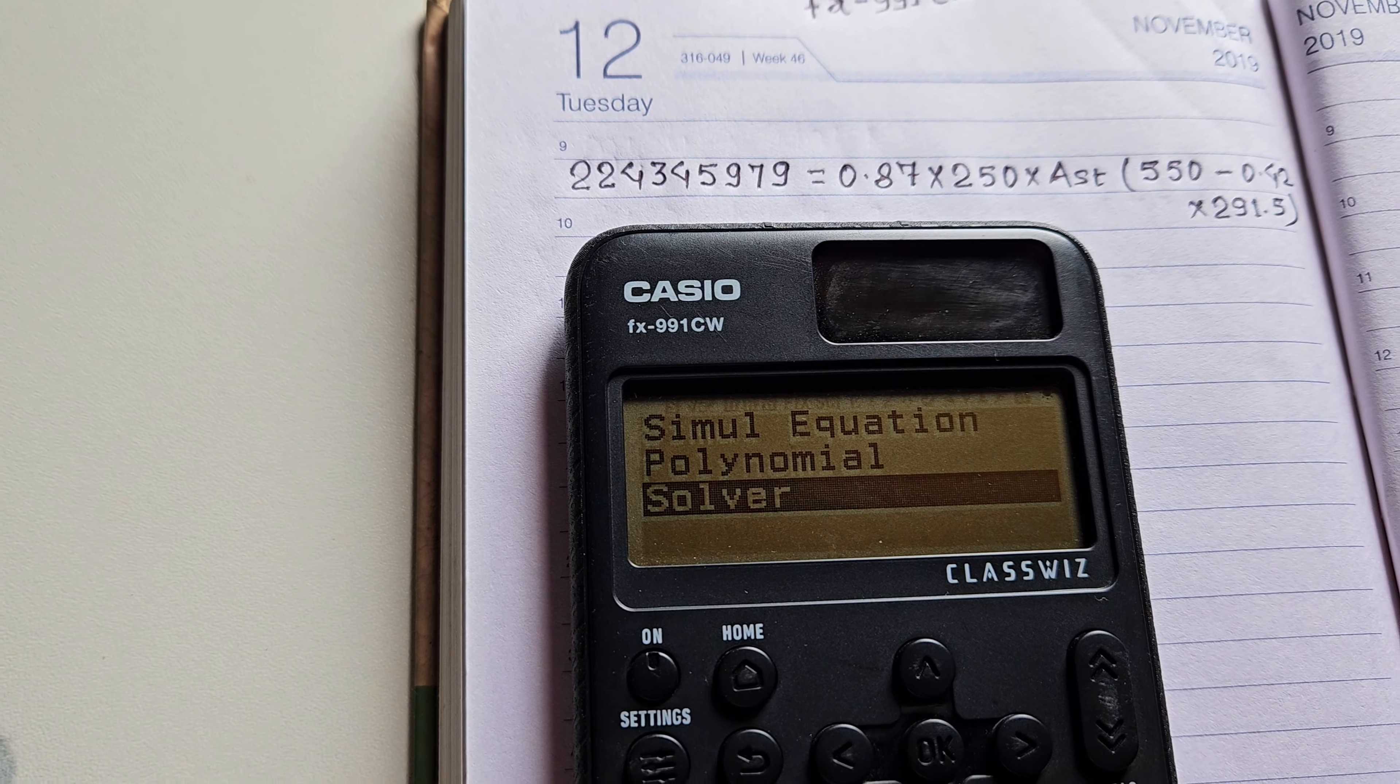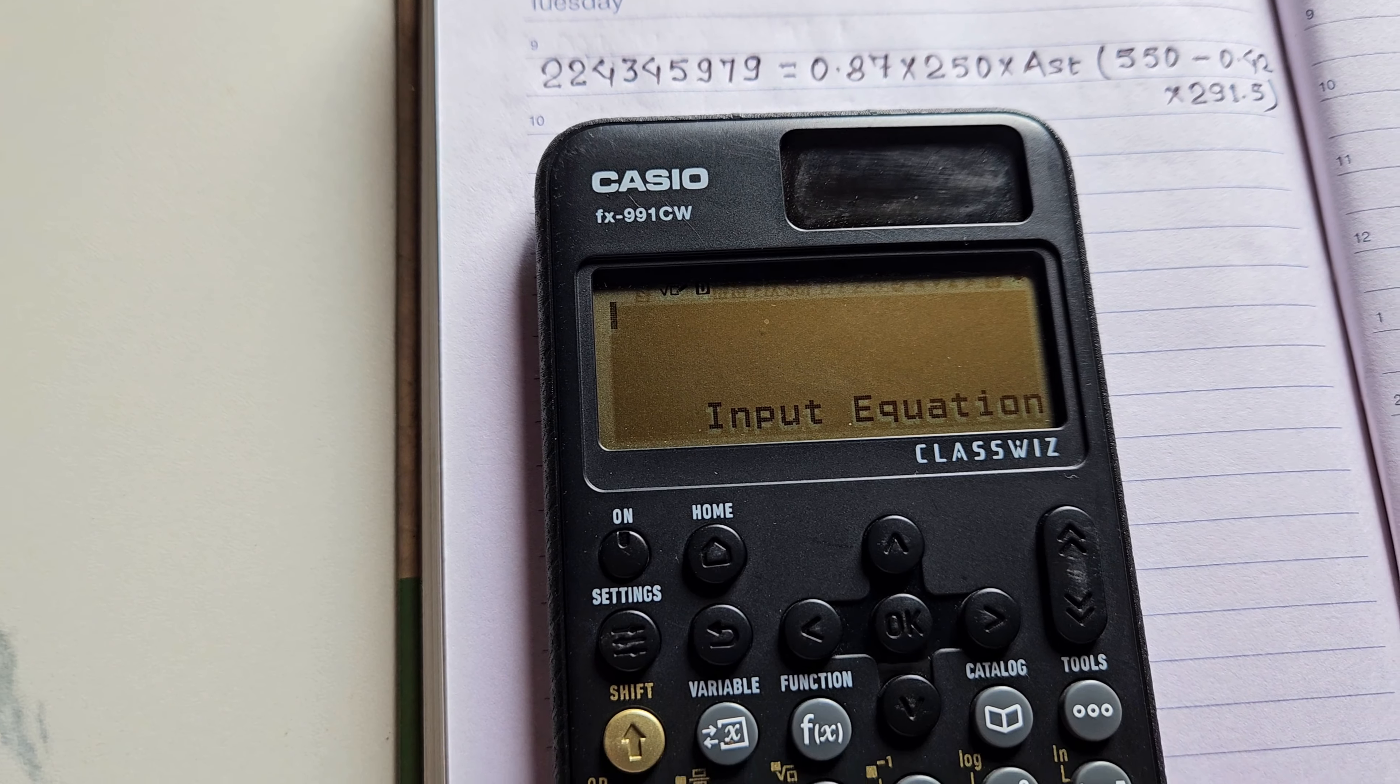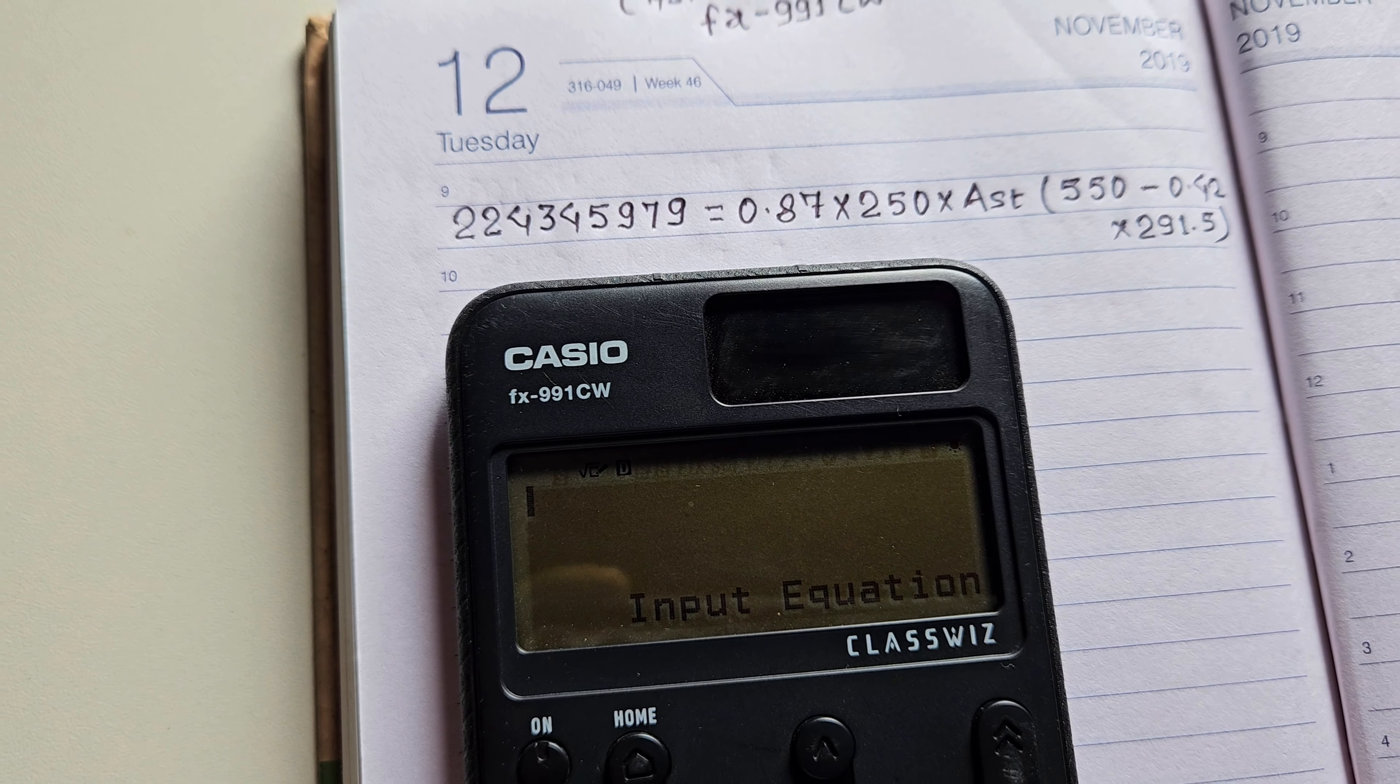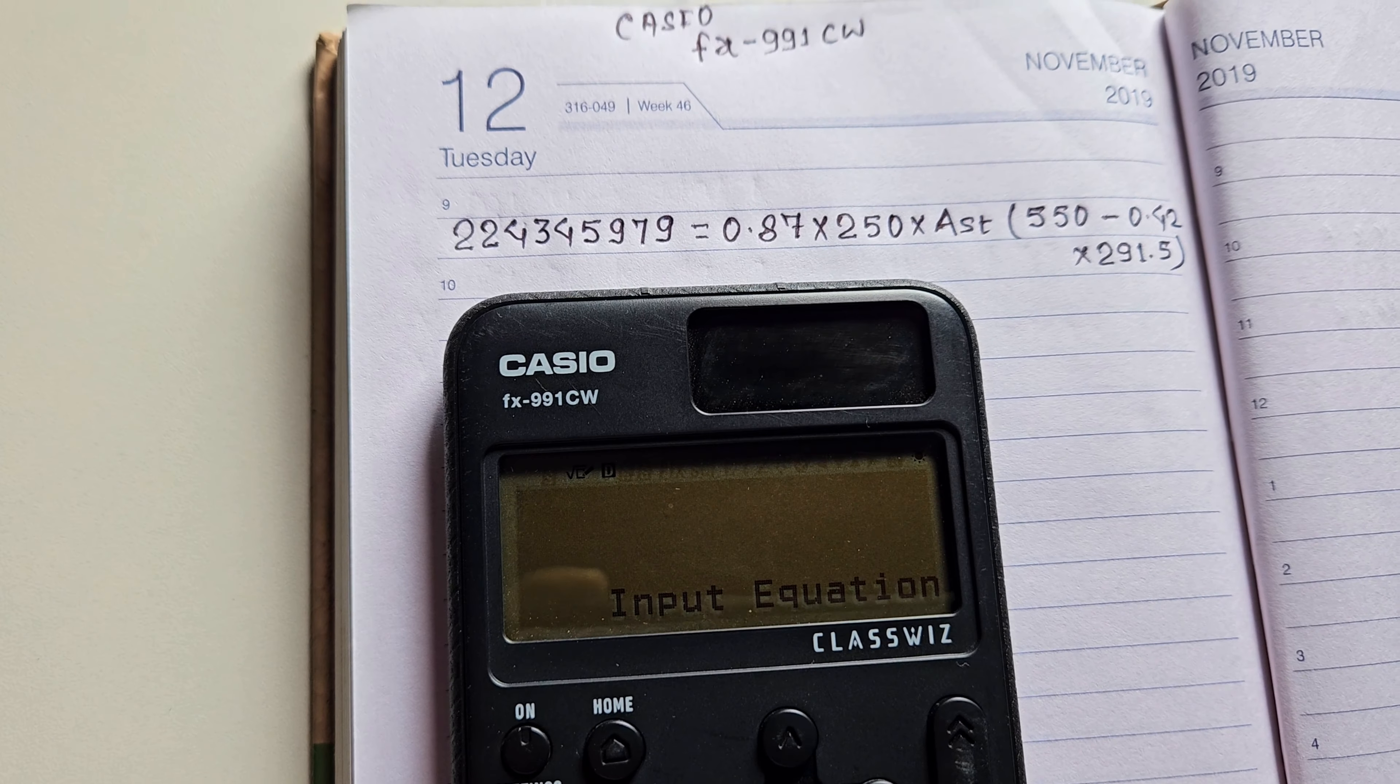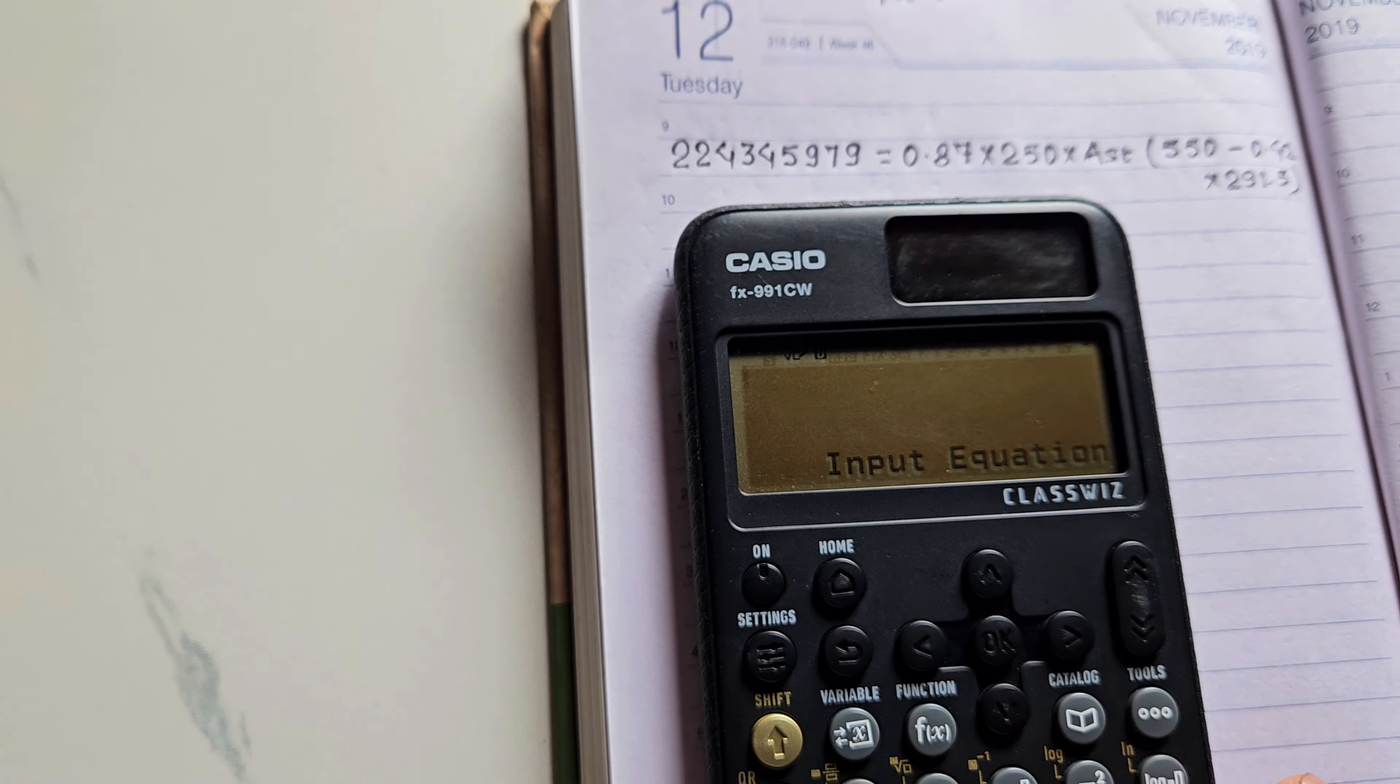This will solve any kind of equation in any format. Click OK, and here it's asking for the equation. Input equation. First we will input the equation that we have to solve. Here I have the equation: 224345979 = 0.87 × 250 × AST × 550 - 0.42 × 291.5. The equation is from RCC.